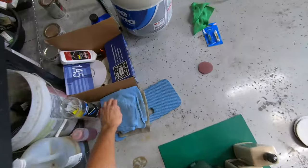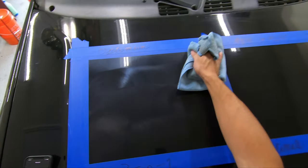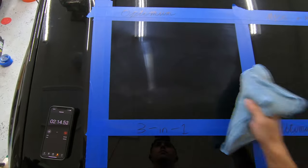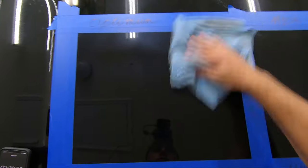Once we wipe off the Hyper Compound, we can see a bit of hologramming from the product, and that's fine. That's where polishing comes in next, but you can still see a notable difference in the amount of swirls.